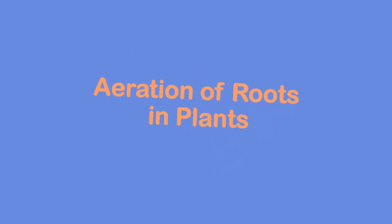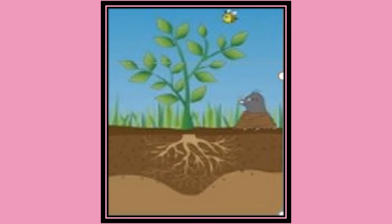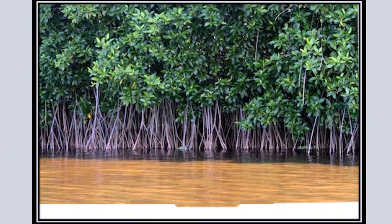Aeration of roots: most plants aerate their roots by taking oxygen through the lenticels or through the surface of their root hairs. They obtain oxygen from the air spaces existing between the soil particles. But some plants which grow in ponds or marshes are unable to obtain oxygen, and they face a problem where air transport is more difficult. Not many survive with their roots permanently in water, so they are adapted to the waterlogged conditions by developing some new structures.